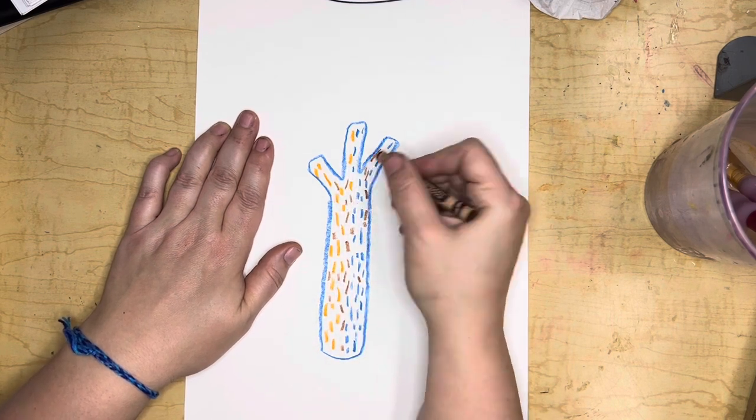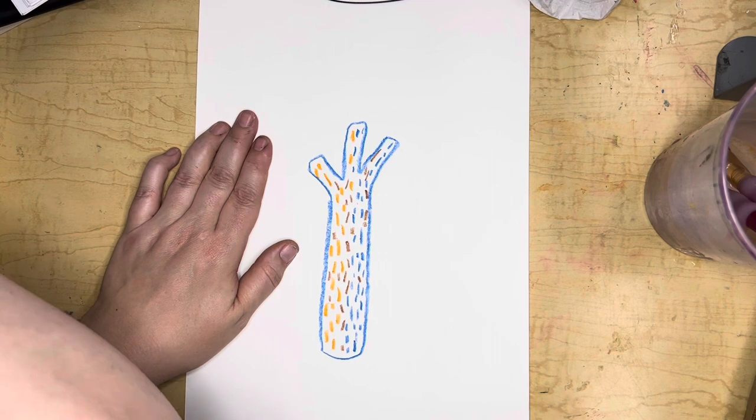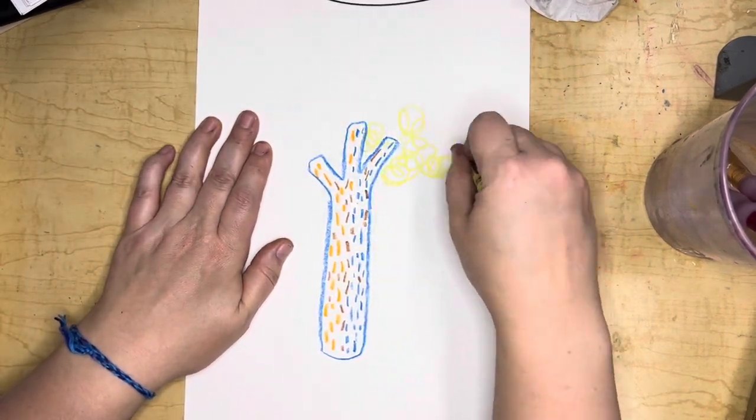In the book Stuck, Oliver Jeffers uses tons of different colors and it just kind of looks like there's different lighting in the day.